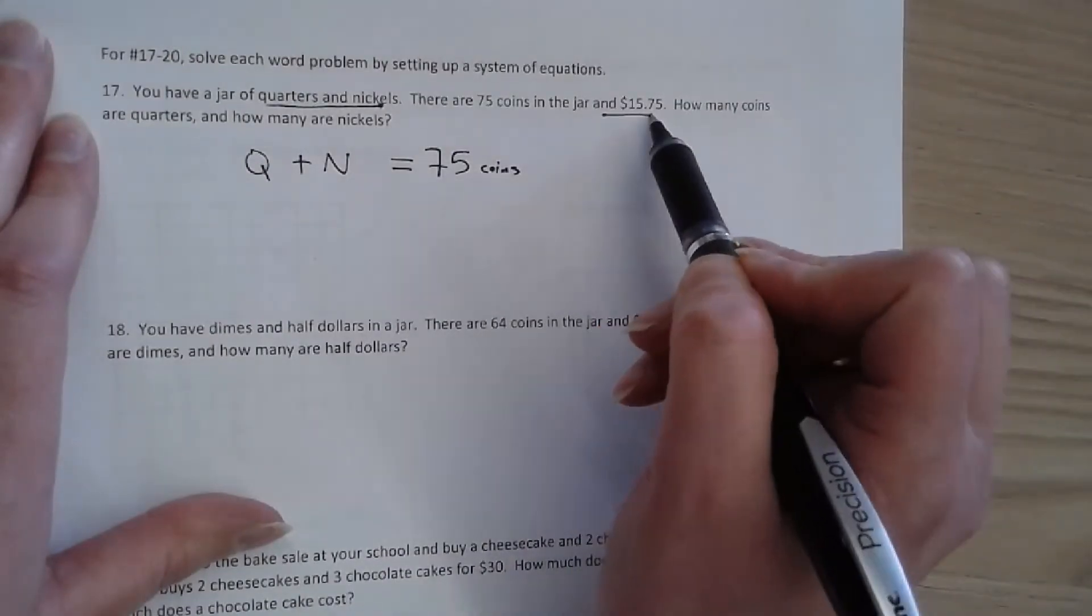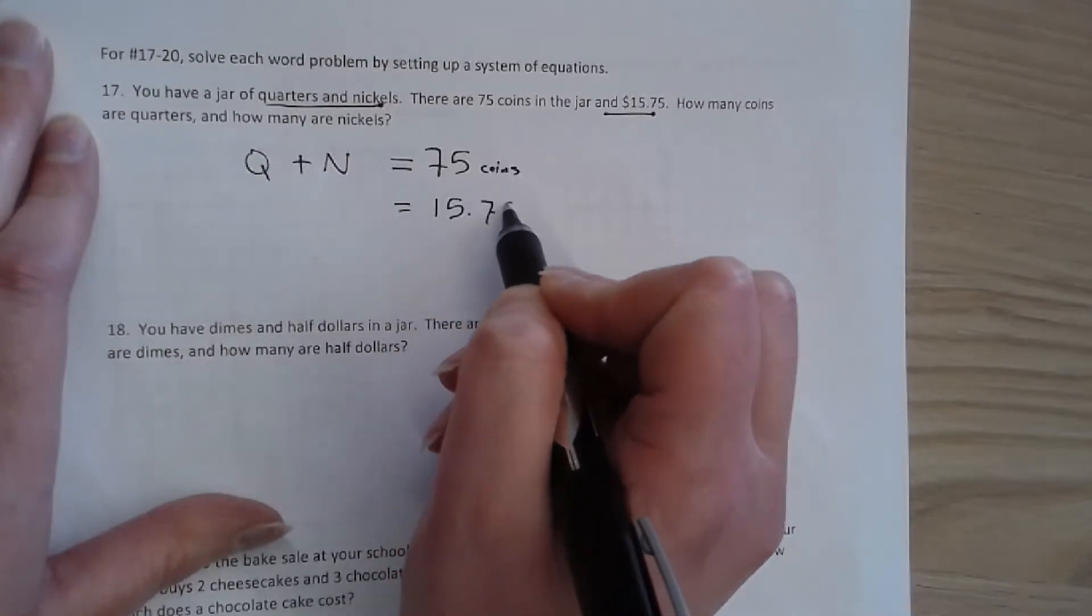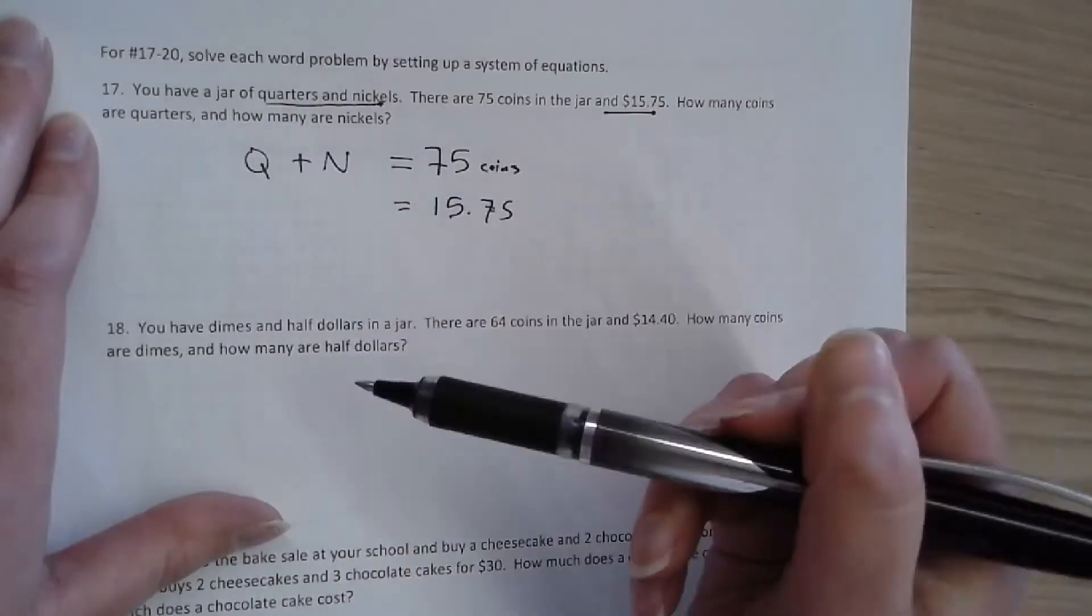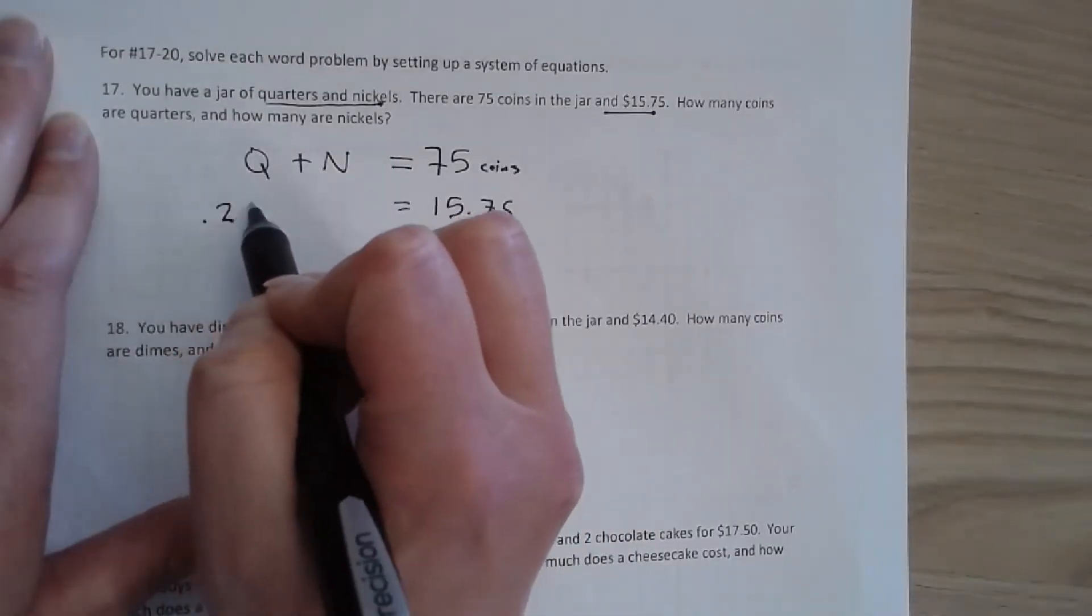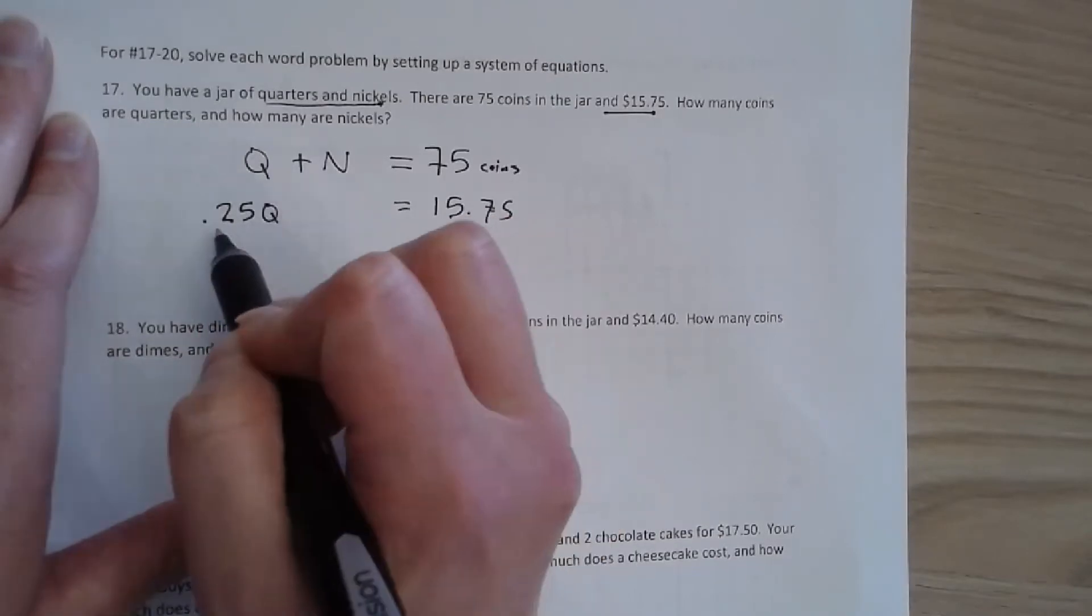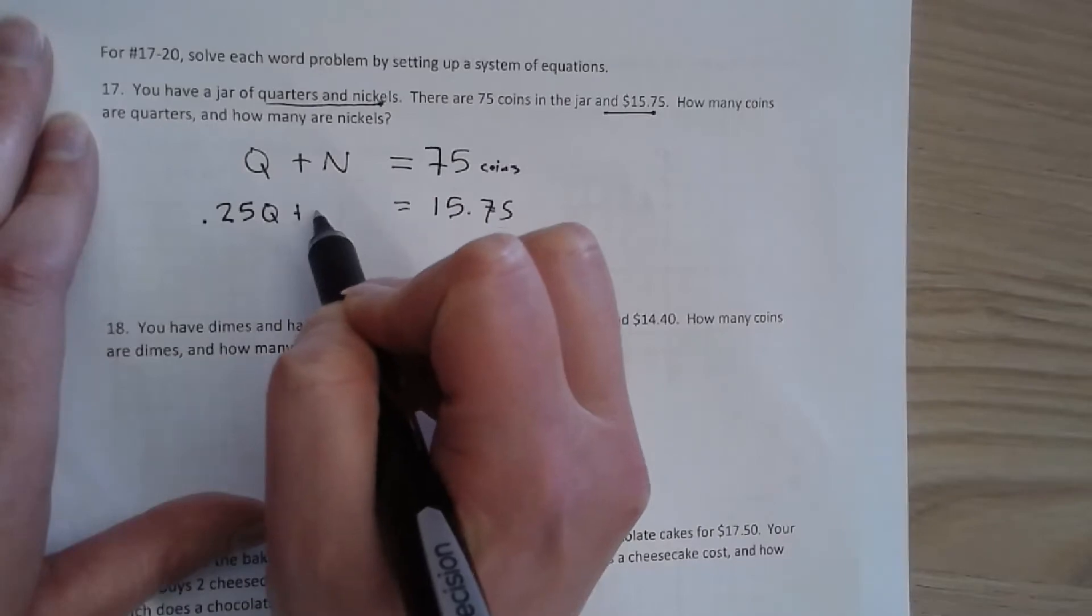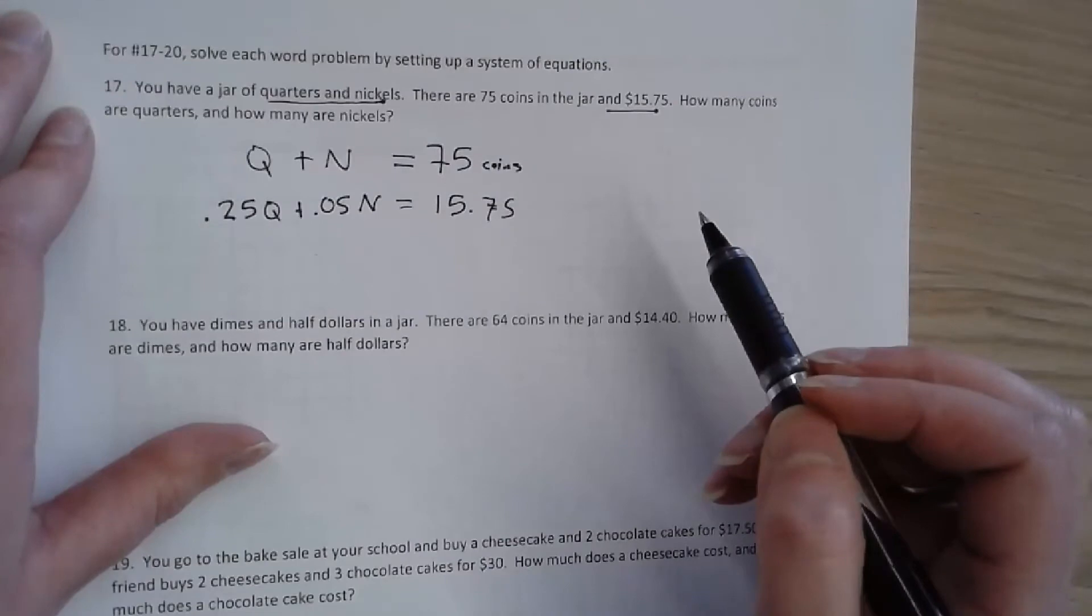We also have a total of 15 dollars and 75 cents. So this time we're talking about money and we know nickels and quarters have a value. So we know quarters are 25 cents per quarter. So for every quarter I'm going to have 25 cents plus 5 cents per nickel for a total of 15 dollars and 75 cents.